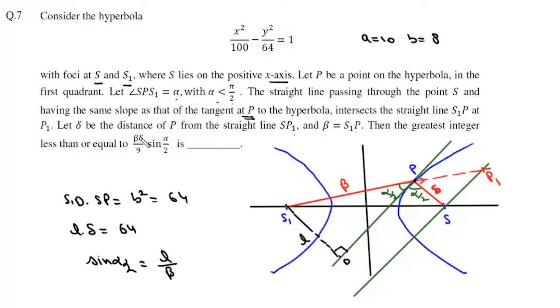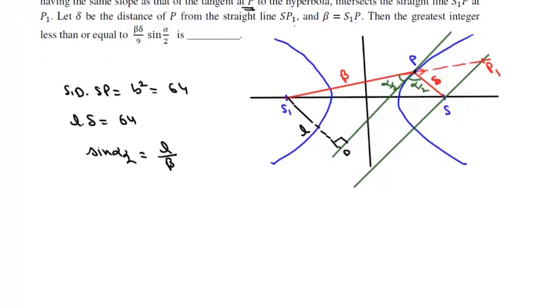So now we have beta delta sin alpha by 2, so we multiply everything with beta delta upon 9. We can write this as beta delta upon 9 sin alpha by 2, which equals beta delta upon 9 times l upon beta. Beta and beta will cancel. l times delta is 64, so this value is 64 by 9, and 64 by 9 is 7 point something.